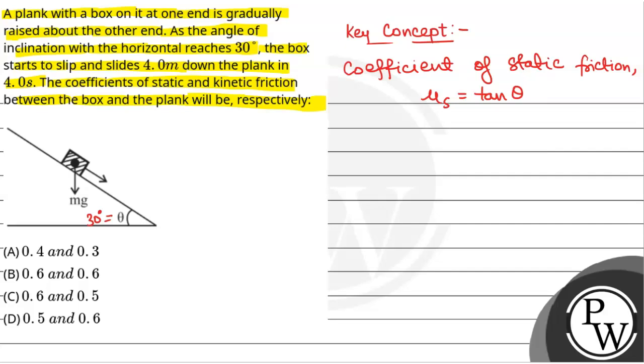Coefficient of static friction mu_s will be equal to tan 30, and tan 30 is equal to 1 by root 3, which is approximately equal to 0.577, which is approximately equal to 0.6. So this will be the coefficient of static friction.